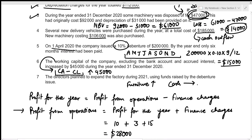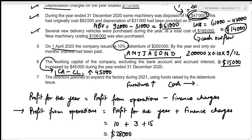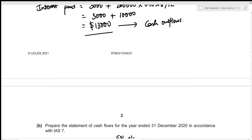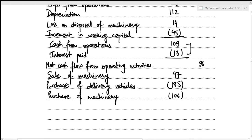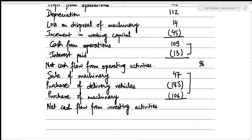We've covered all information for investing activities — the debenture goes into financing activities and working capital was already recorded. Net cash flow from investing activities = 47 − 185 − 106 = (244,000).